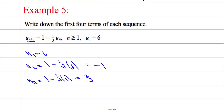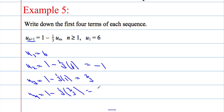And then one more: u(4) equals 1 minus 1 third times the previous term, which is 2 over 3. 1 third times 2 thirds is going to give us 2 over 9. So 1 minus 2 over 9 is going to give us 7 over 9.